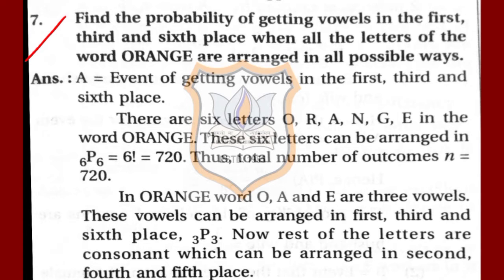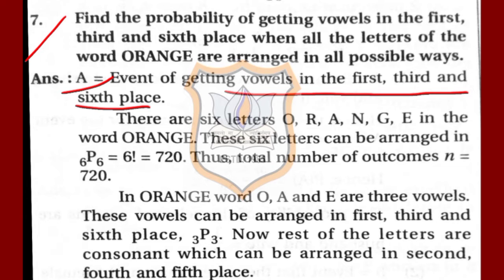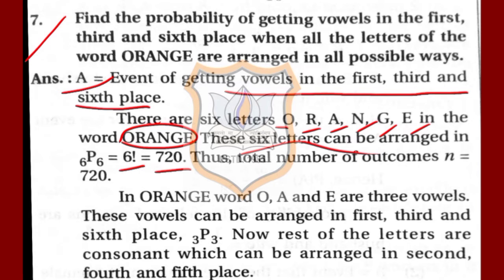First, let us define event A: getting vowels in the first, third and sixth place. In the word ORANGE, the letters are O, R, A, N, G, E — six letters in total. Six letters can be arranged in 6P6 or 6 factorial ways. 6 factorial equals 720, so the total number of outcomes N is 720.